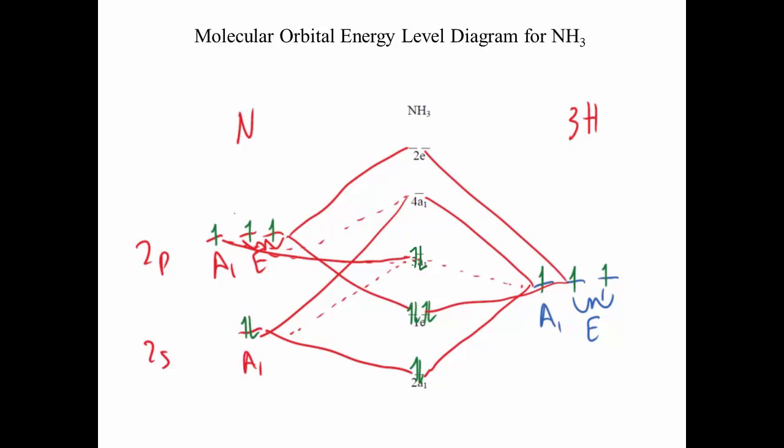Now we can put all this together to show the molecular orbital energy level diagram for ammonia where the 2s orbital overlaps with the SALCs to make the 2A1 bonding and the 4A1 antibonding. The 2pz forms the 3A1 non-bonding. And the e orbitals form the 1e bonding and 2e antibonding. Then we add the electrons to make a bond order of 3 and a lone pair on the nitrogen pz.